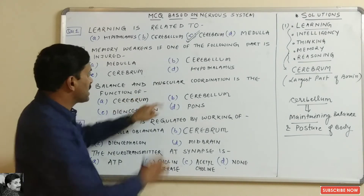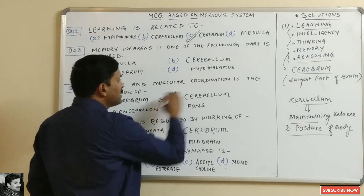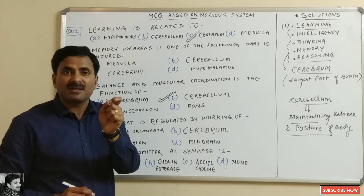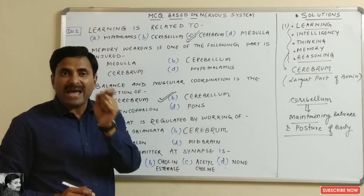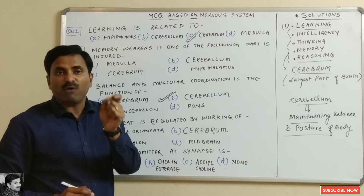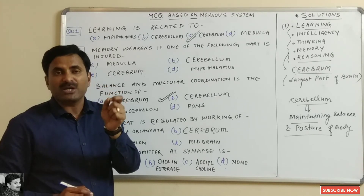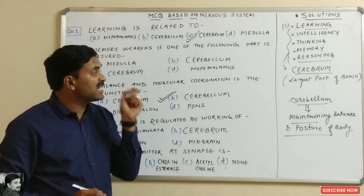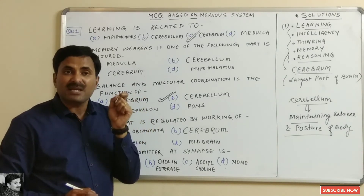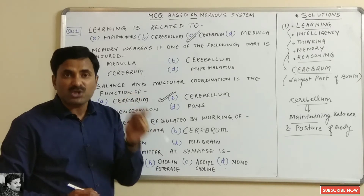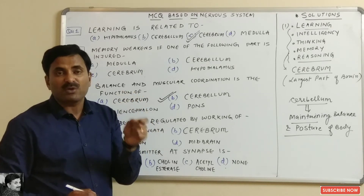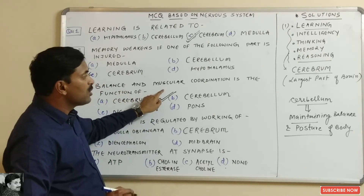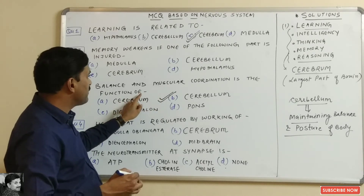So option B, the cerebellum, is correct. This concept is also tested in medical examinations: why is a drunken man unable to control his body? When a person consumes alcohol, the cerebellum stops working, and when the cerebellum stops working, the person cannot control posture or balance.